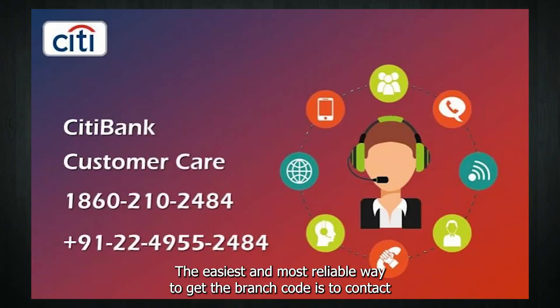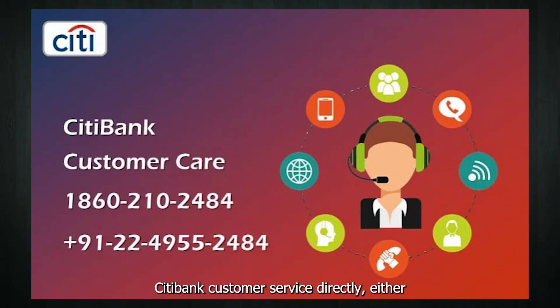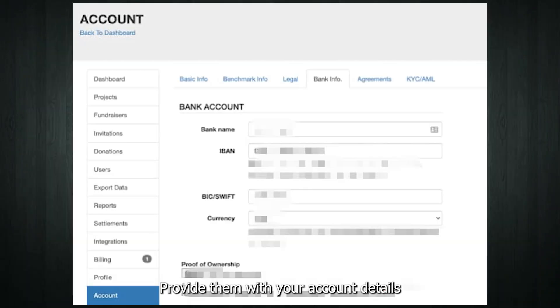The easiest and most reliable way to get the branch code is to contact Citibank customer service directly, either through their helpline or at a branch. Provide them with your account details, and they should be able to assist you.